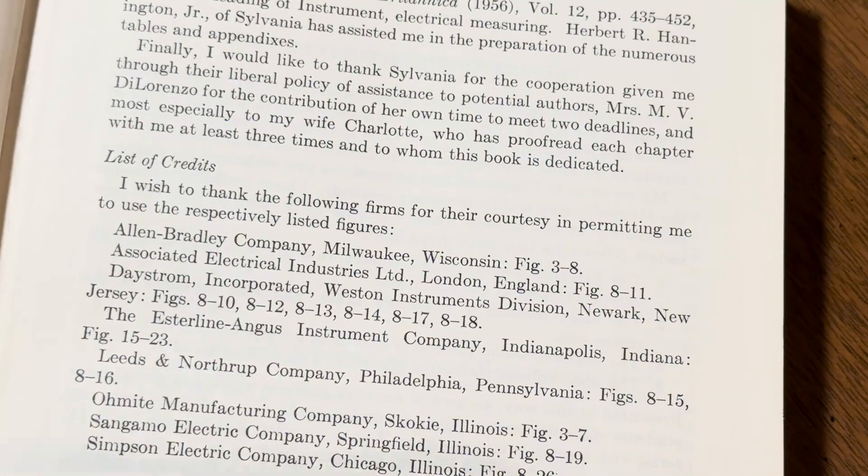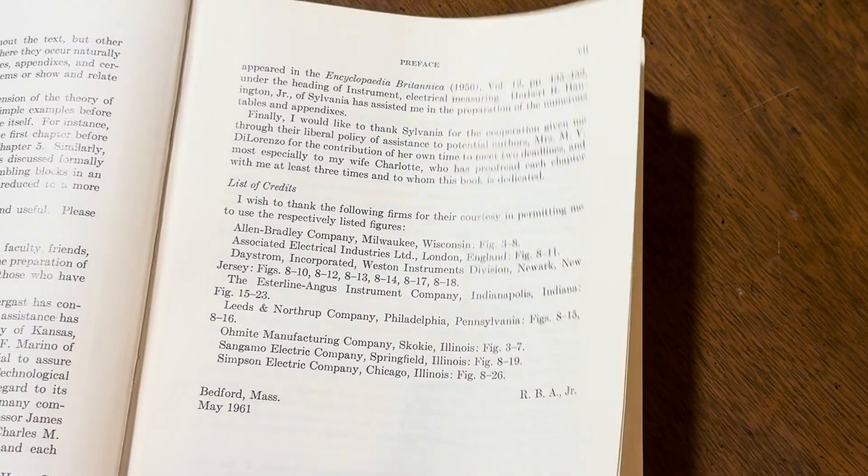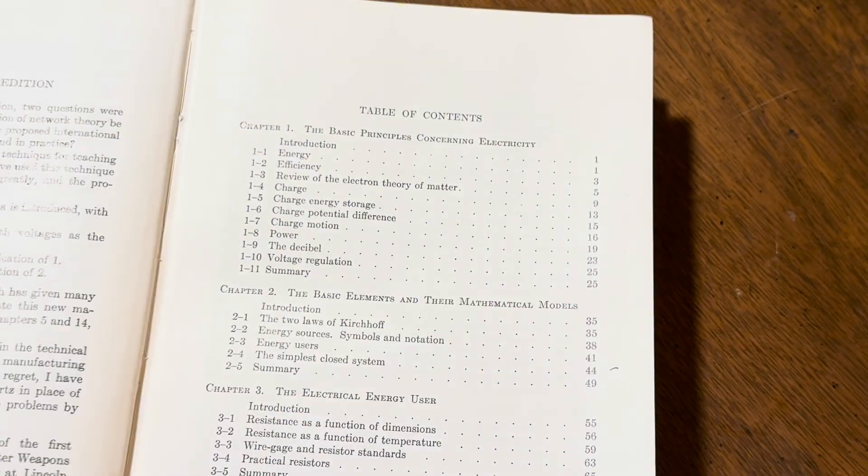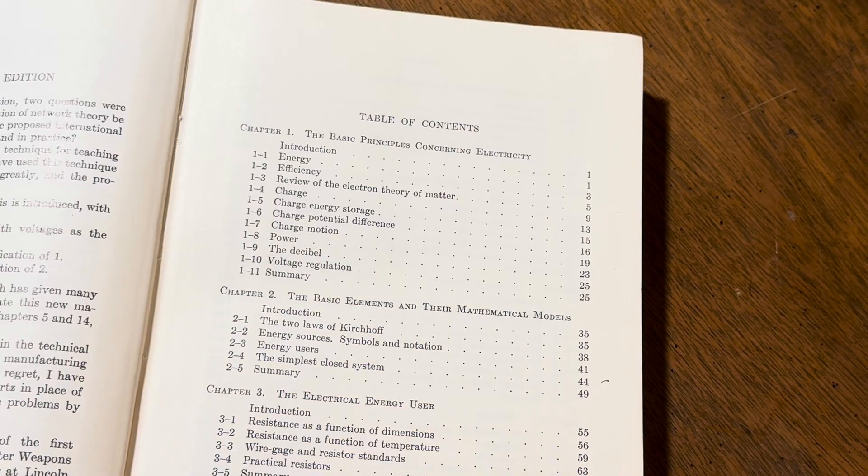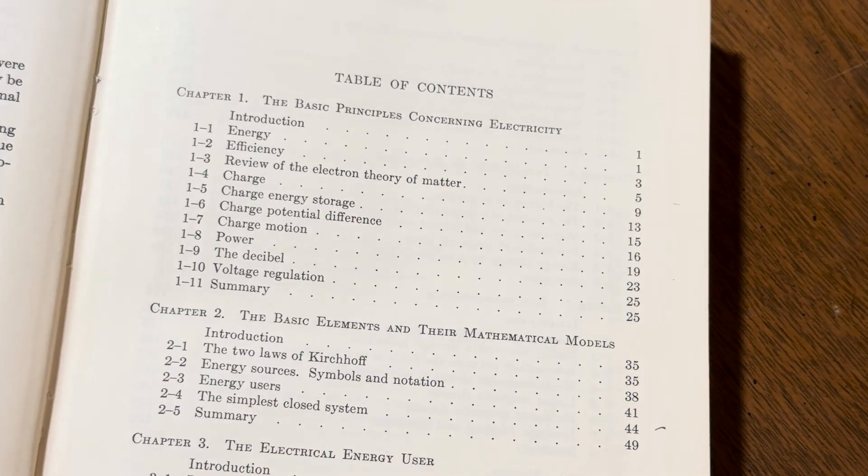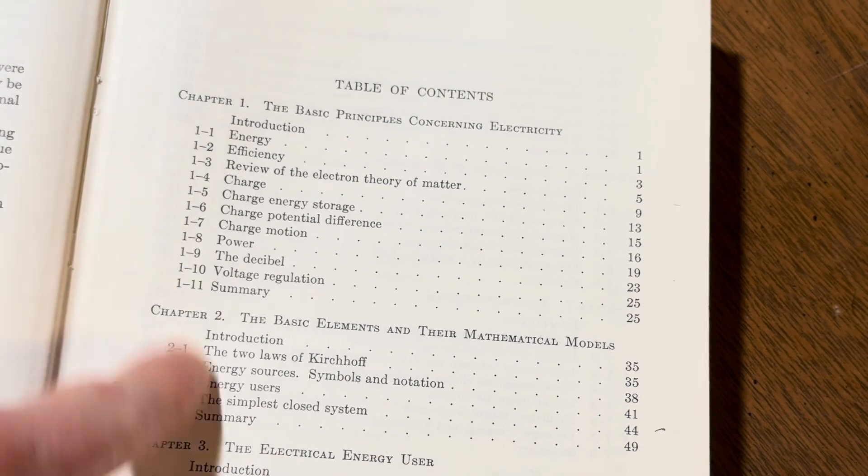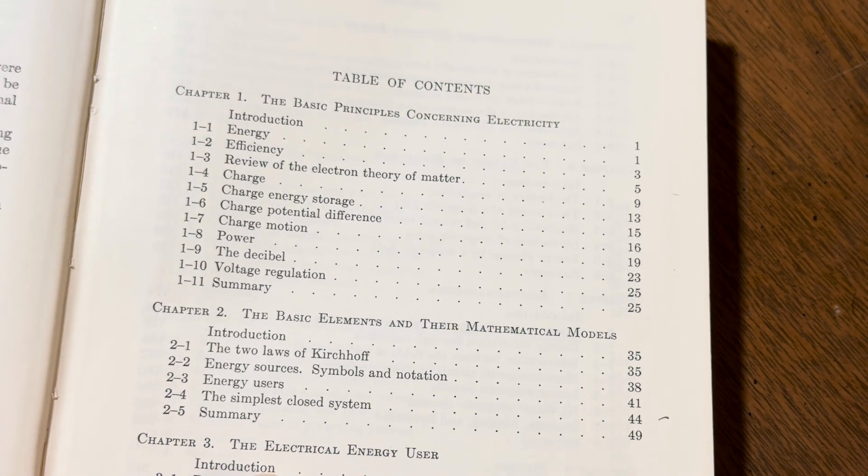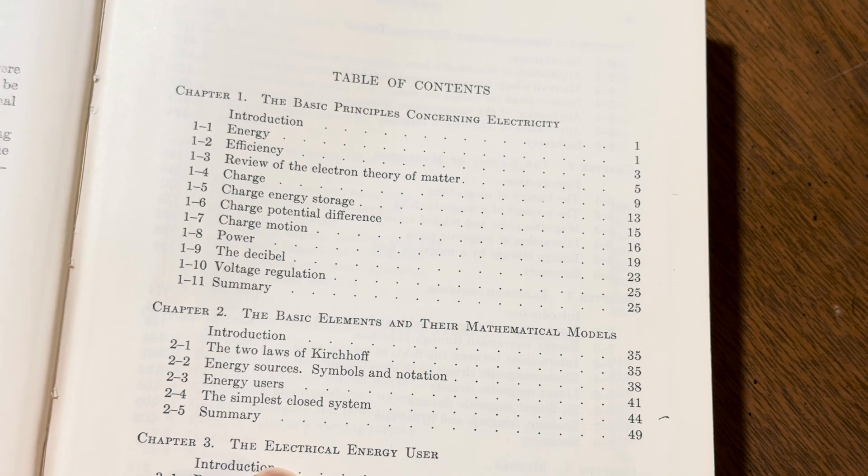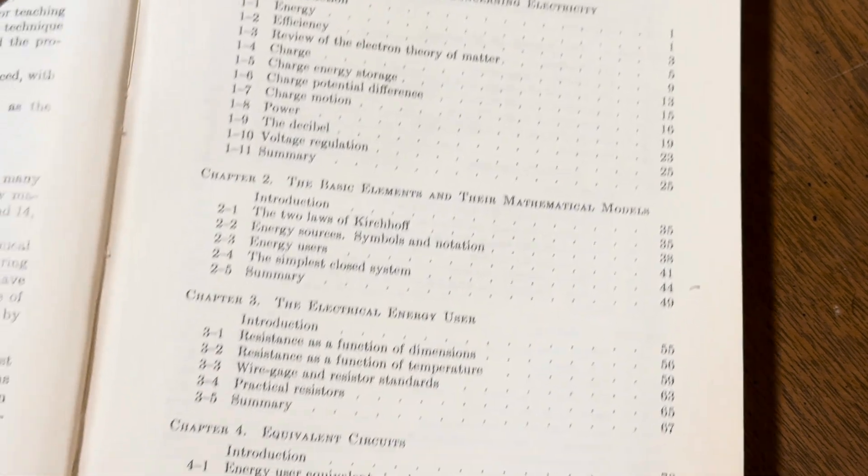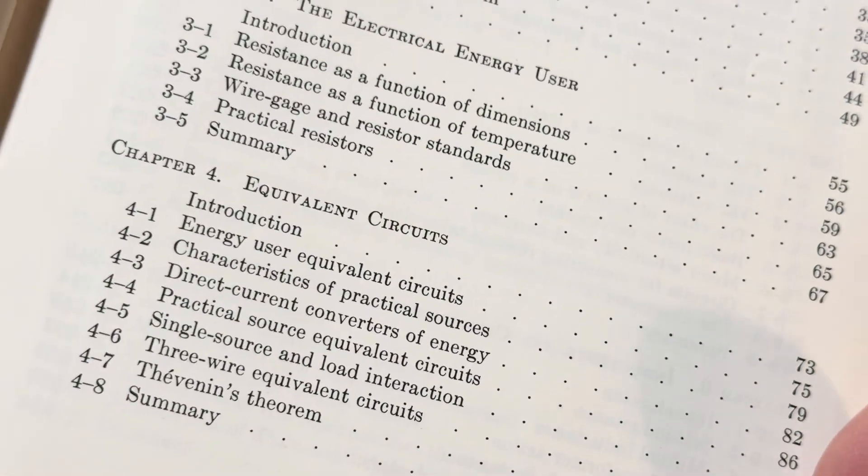Let's take a brief look here at the contents of this book so you can see what it contains. Table of contents. So the basic principles concerning electricity. So we have these topics here. The basic elements and their mathematical models. The electrical energy user smells really good. Equivalent circuits.